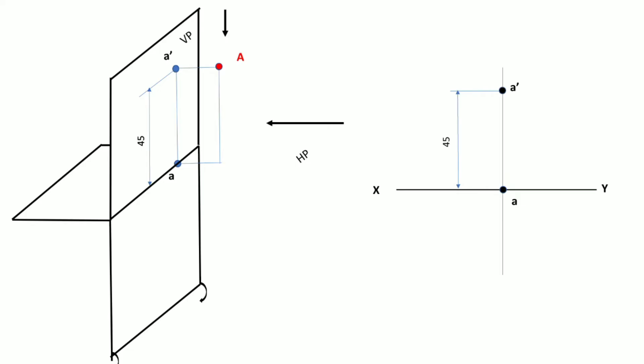This is the projection of any point kept on the vertical plane. Similarly, if any point is lying on the horizontal plane, its front view lies on the XY line. You draw a straight vertical projector line, and whatever distance the point is kept in front of the vertical plane, you take that distance downward from the XY line to get point a in the top view. Now it comes to projecting any line.